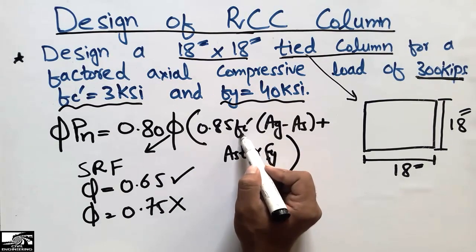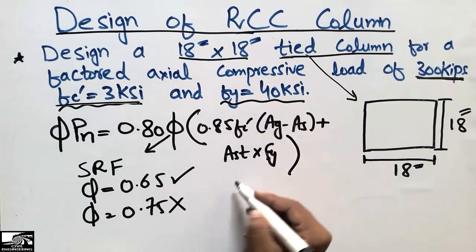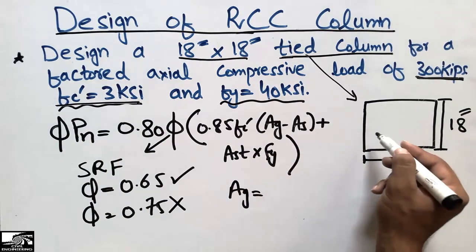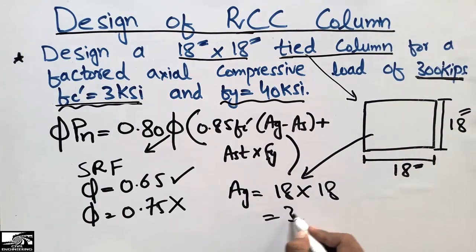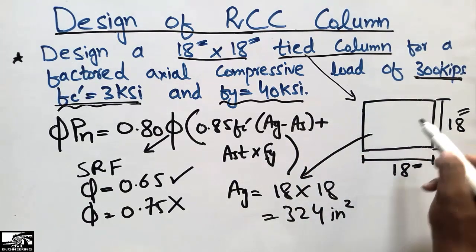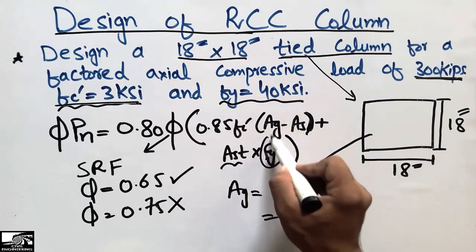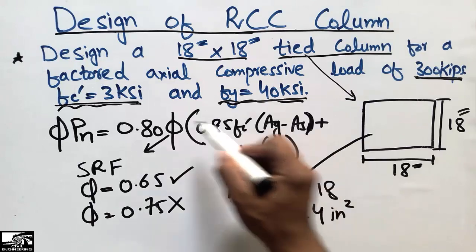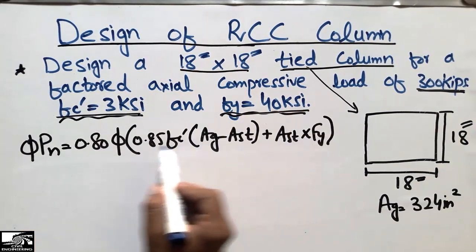In the formula, f'c is the concrete strength, and Ag is the gross cross-sectional area of the column, which is 18 × 18 = 324 in². The area of steel As is unknown — that is what we are designing for. Then we add As multiplied by fy = 40 ksi to close the bracket.